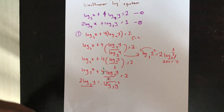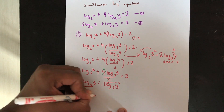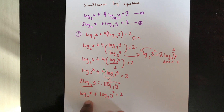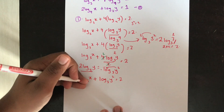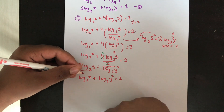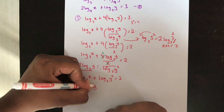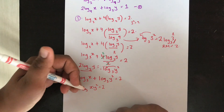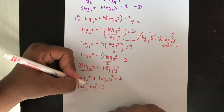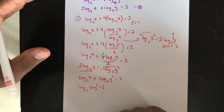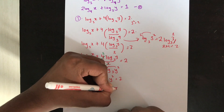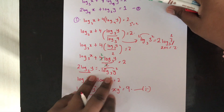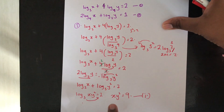Writing it in standard form: log x base 3 plus log y² base 3 equals 2. The bases are both 3, so I can apply the product law of logarithms to combine them: log (x · y²) base 3 equals 2. To remove the log I move the base to the other side, giving x · y² equals 3² which equals 9. This is the simplified form of equation 1.